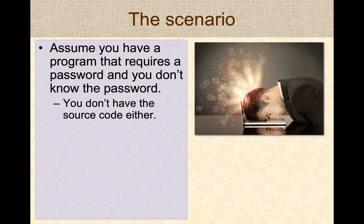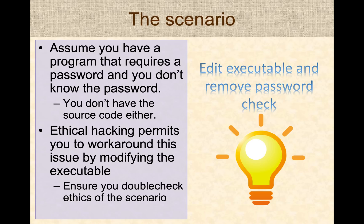Here's the scenario we'll work with. Assume that you have a program — specifically an executable — and that executable requires a password before it will operate. Unfortunately you do not know the password and you don't have the source code either, so you're stuck with this executable and you have to get it to work. The question is: what do you do in this situation?